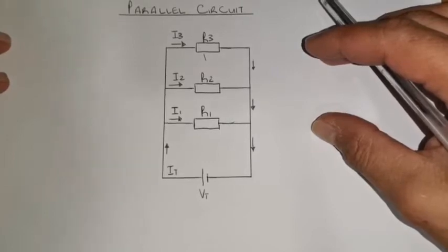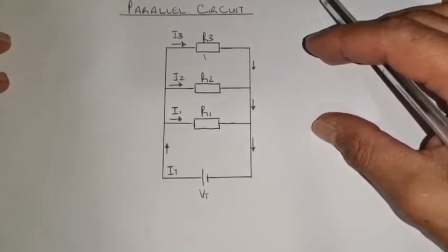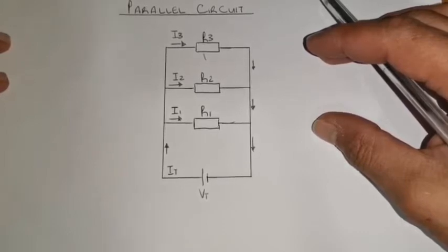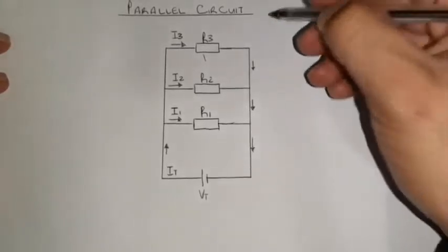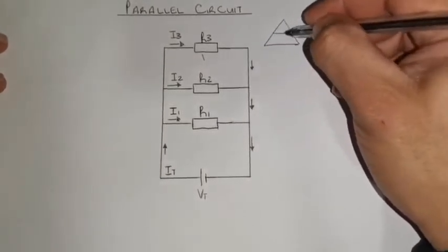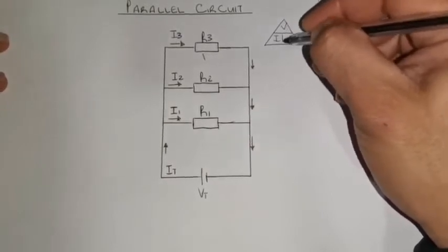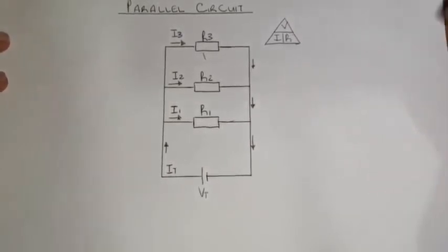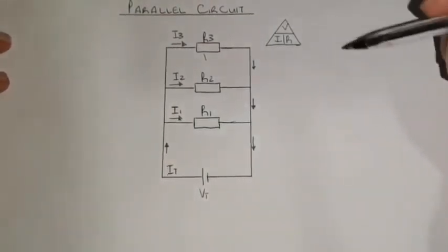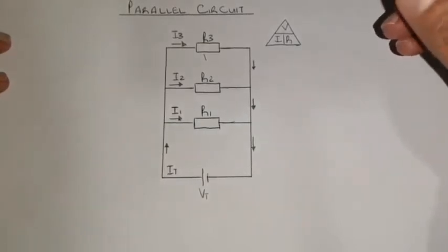Now, the first thing you need to do when you start solving this specific circuit is draw the pyramid. The purpose of the pyramid is that you can derive your formulas from it, so you don't need to memorize your formulas when you are in a test or exam. Draw the pyramid, and from it you can derive the voltage formula, current formula, and resistance formula.